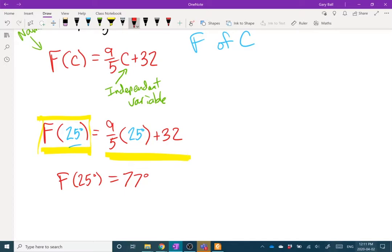So that's essentially saying, if I put 25 degrees into my function, it spits out 77 degrees.